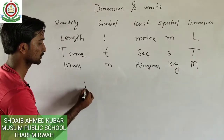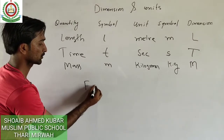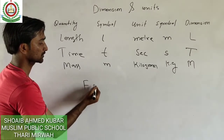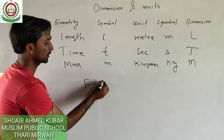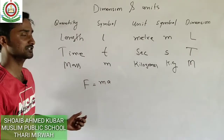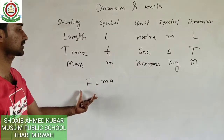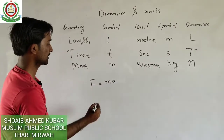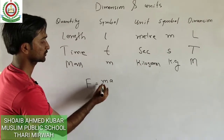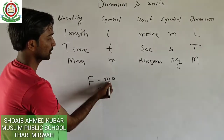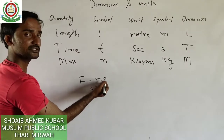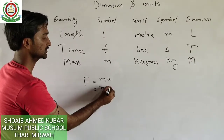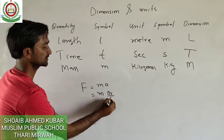Now let's look at a basic quantity: force. According to Newton's second law, force equals mass times acceleration — F = ma. So the mass dimension is capital M, and acceleration is the rate of change of velocity.